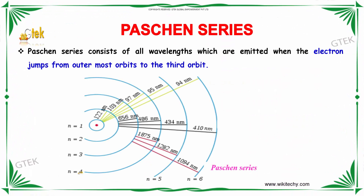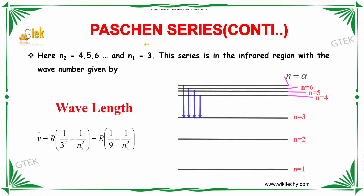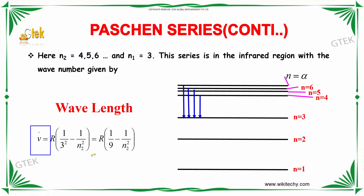The Paschen series involves an electron moving from an outer orbit to the third orbit. Here the value of n1 is 3 and n2 is equal to 4, 5, 6. This series lies in the infrared region, with the wave number given as ν̃ = R(1/9 − 1/n2²).